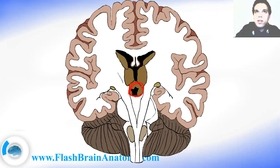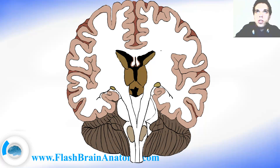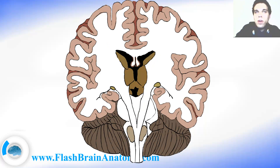We have the interpeduncular fossa. The interpeduncular fossa can be seen from the outside — that is not inside of the brain. To see this, check out my lesson about the mesencephalon or the midbrain. As I mentioned, this is the internal capsule on both sides, and the internal capsule divides the thalamus and the caudate nucleus from the pallidum and putamen.